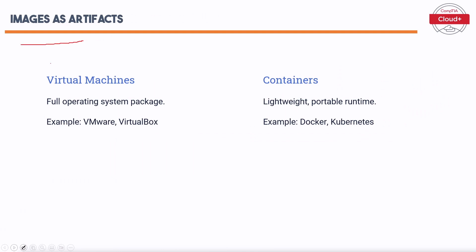Images are a common type of artifact used in modern software development. The two main types are: Virtual Machines — full operating system packages, with examples including VMware and VirtualBox, which provide complete OS environments for running applications. Containers — lightweight and portable runtimes, with examples including Docker and Kubernetes, offering efficient and scalable environments for deploying applications.